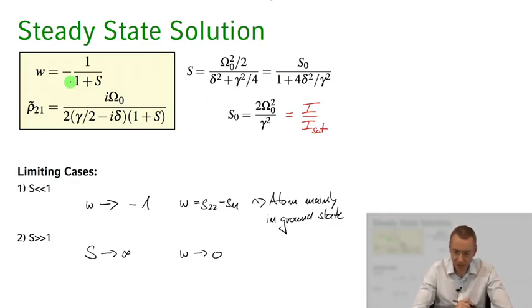So we see that the system kind of always tends to have a little bit more population in the ground state compared to the excited state in this two-level atom. Even when we drive it extremely hard, the steady state solution can only approach the 50-50 occupation limit of those two to two levels that we have in our system.